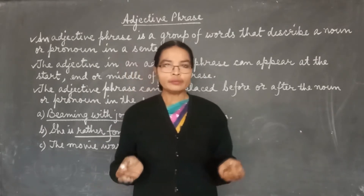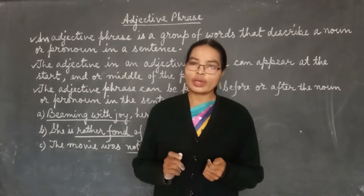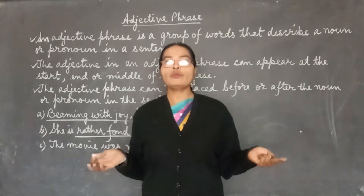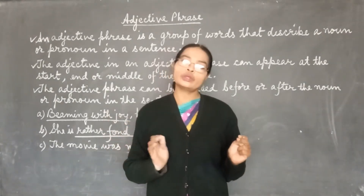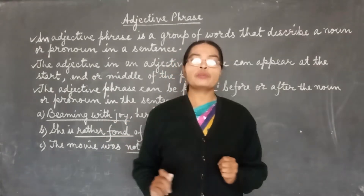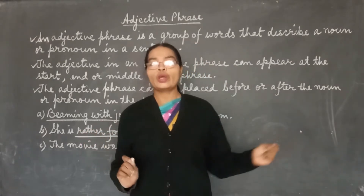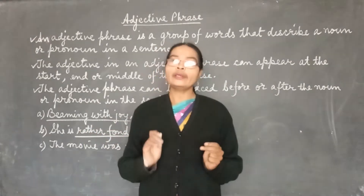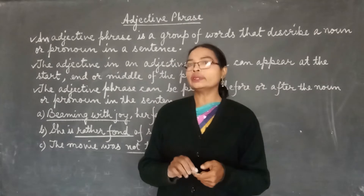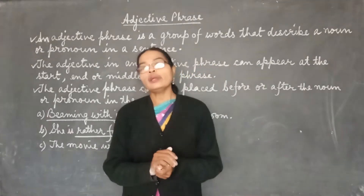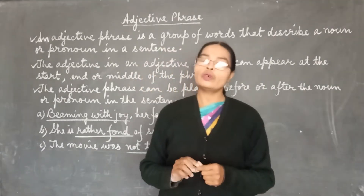Just as an adjective tells something about or describes a noun or pronoun, an adjective phrase also describes a noun or pronoun in a sentence. But the difference is that an adjective is one word, while an adjective phrase is a group of words.